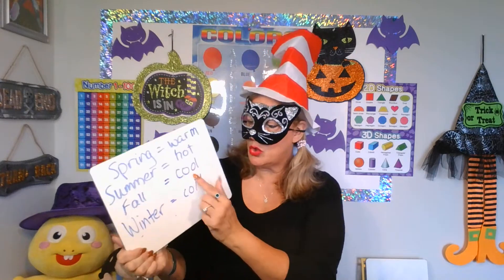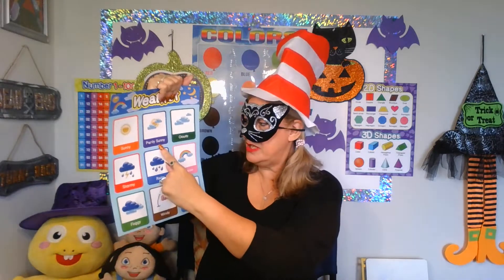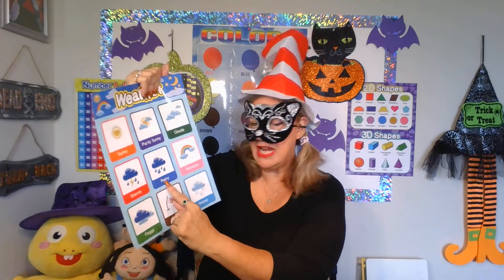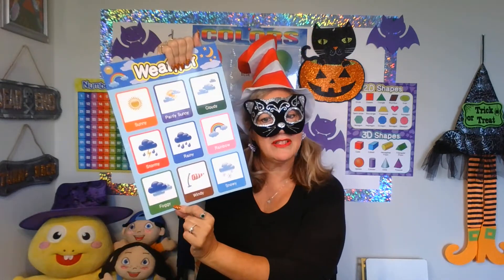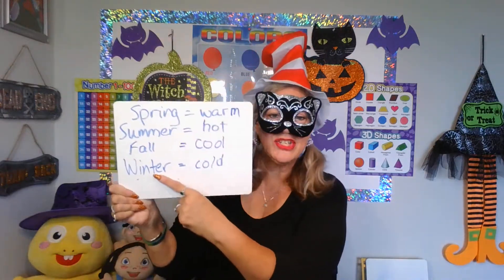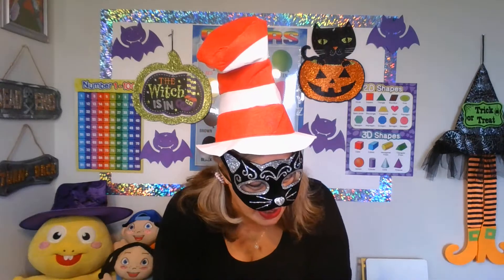What about in the fall when it is cool weather? Do you think you could see sunny, partly sunny, cloudy, stormy? Maybe stormy. Rainy? Maybe a rainbow. Foggy? You can even find some foggy weather when it is cool — the temperatures are changing. Windy? Most definitely. Snowy? Not yet — it has to be winter to be cold and snowy.